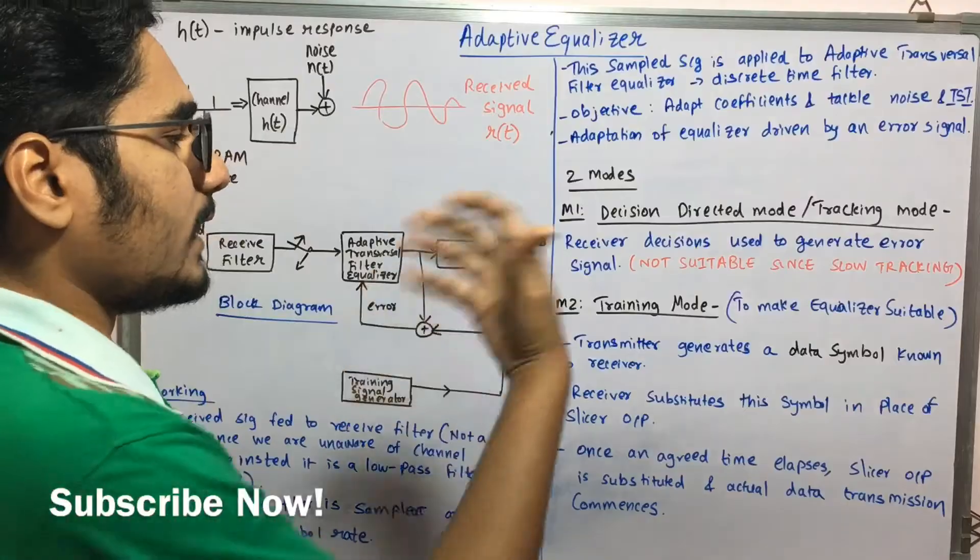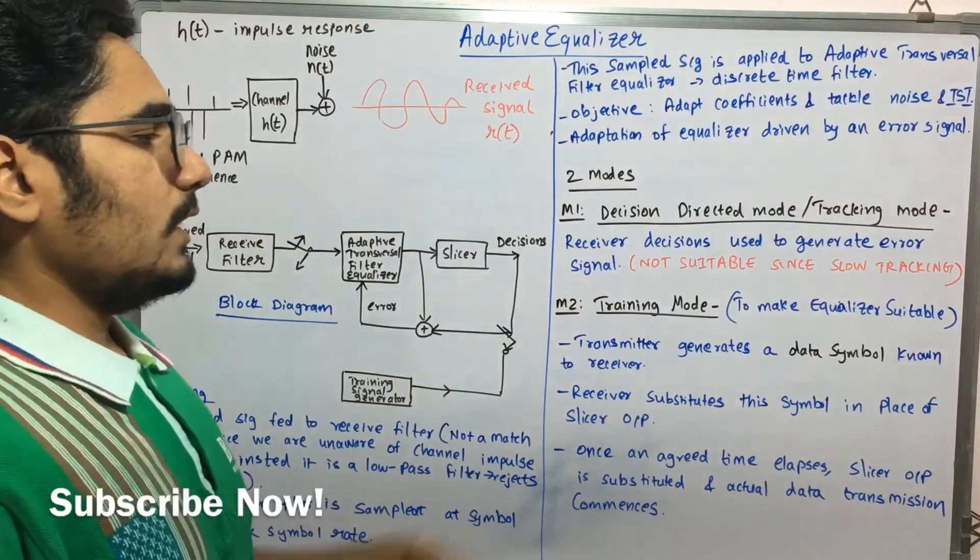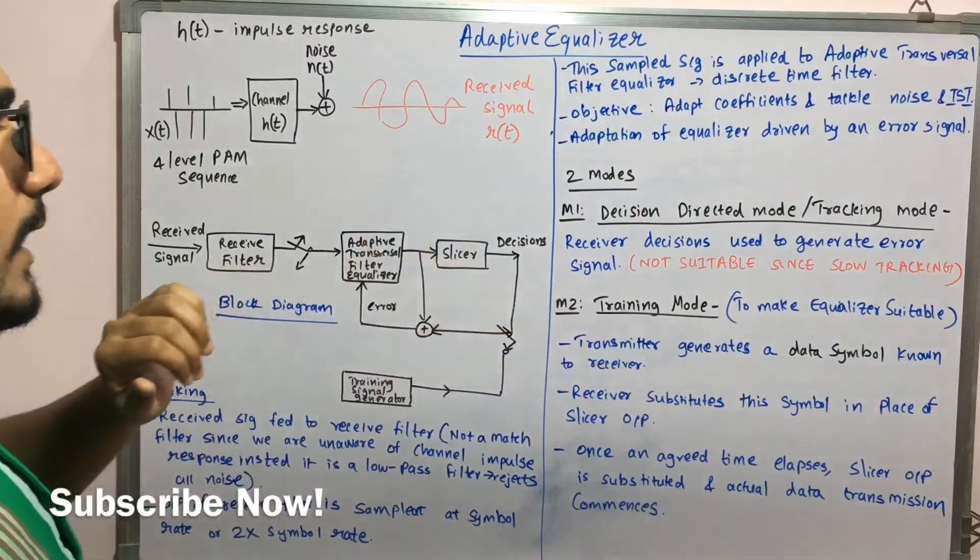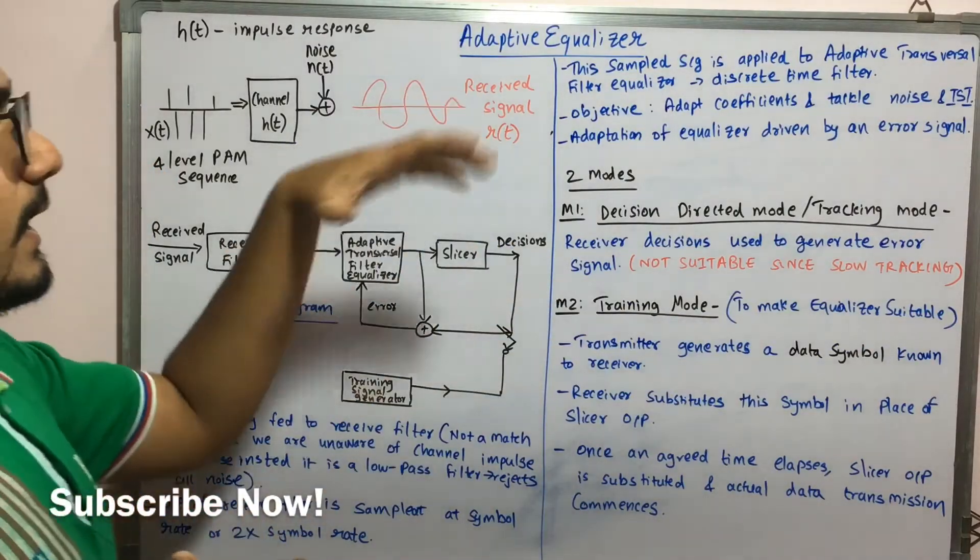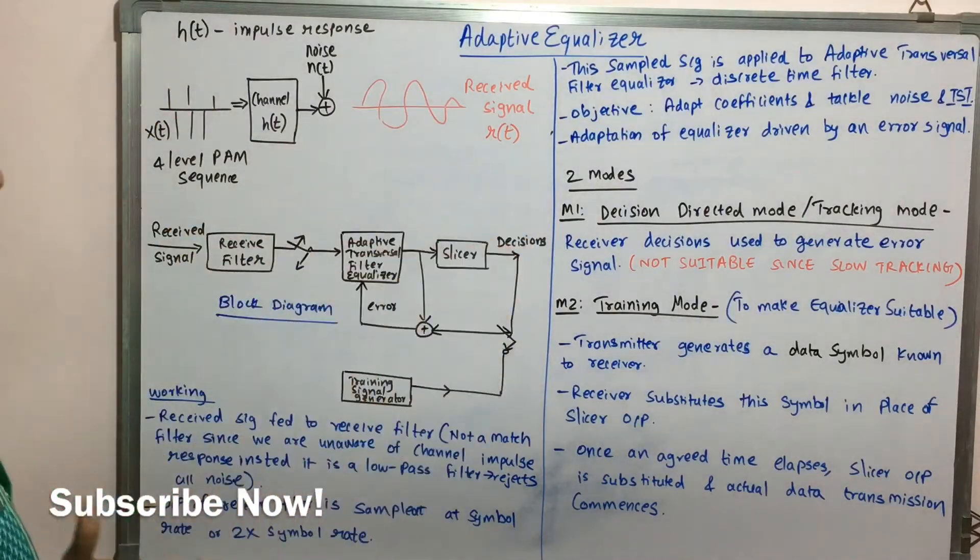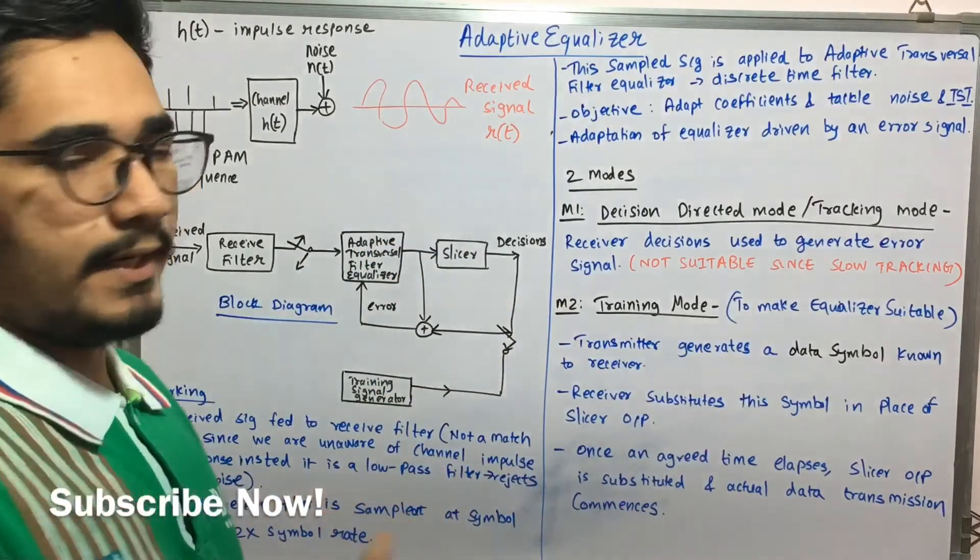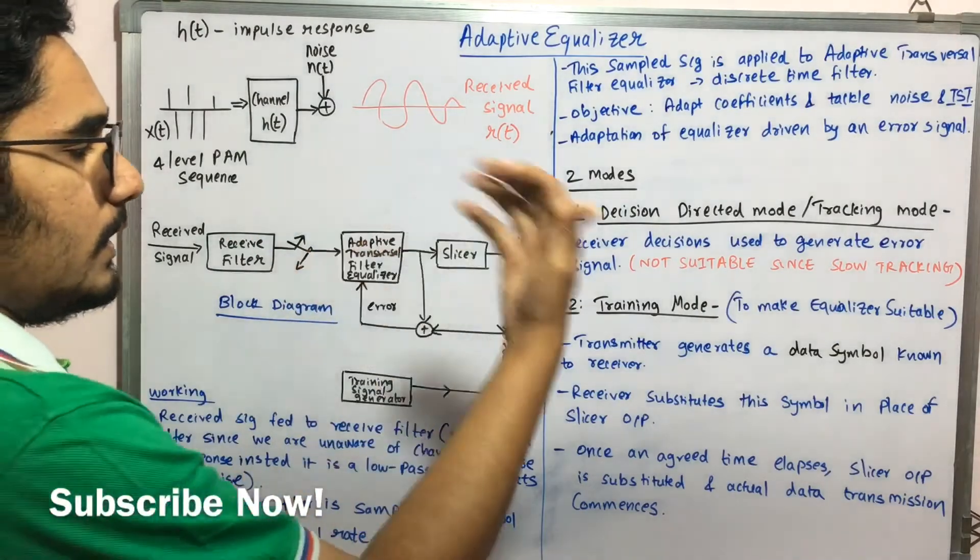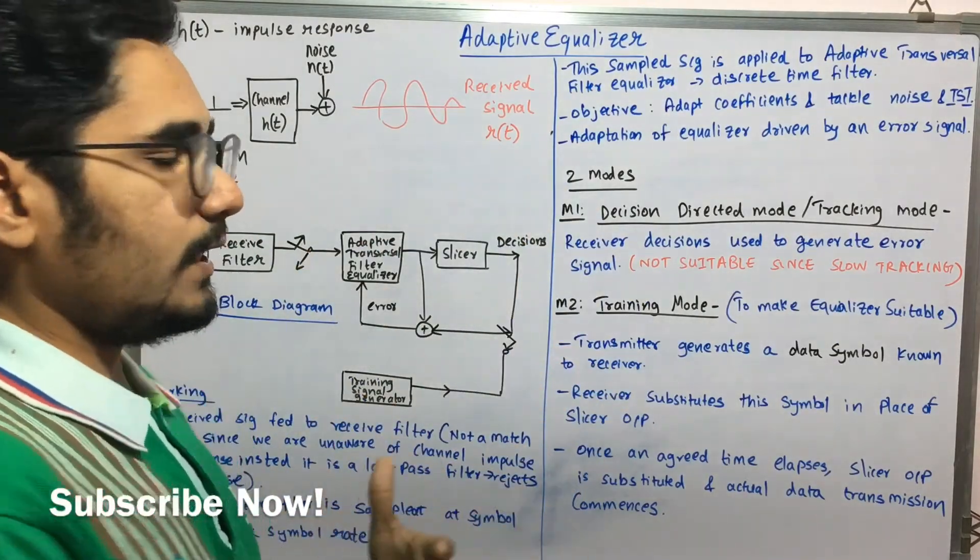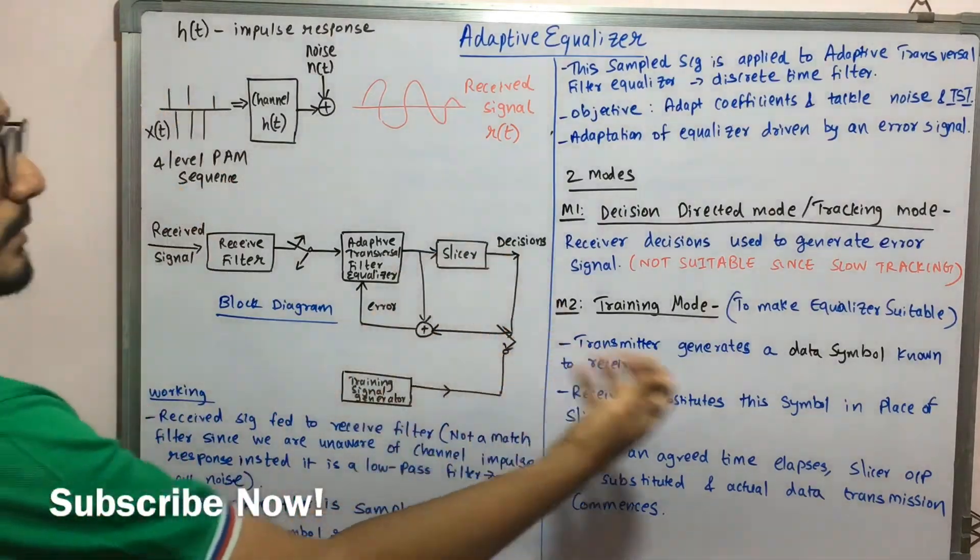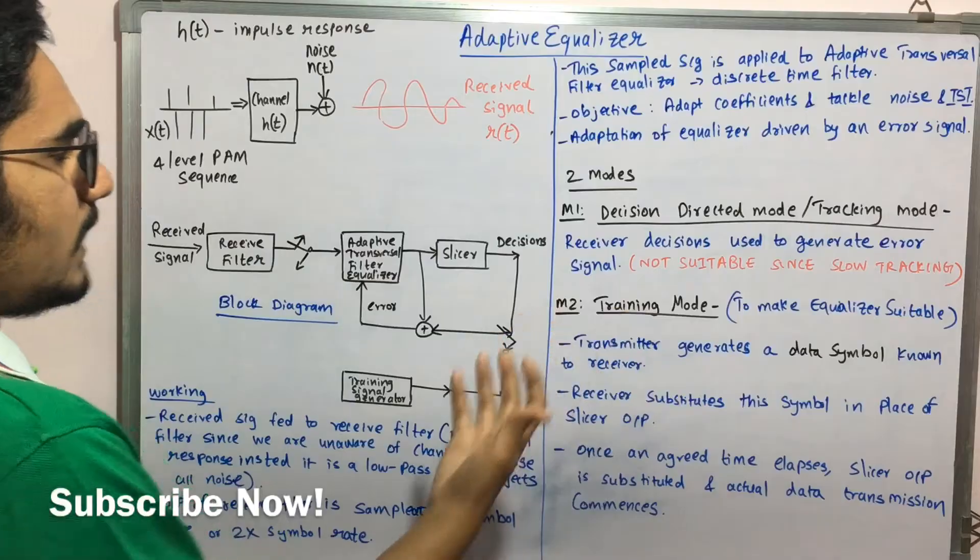And so we employ the second type of mode that is the training mode, which is used to make the equalizer suitable according to the environment. That's the name. It's called as the adaptive equalizer, adaptive to the situations. So in this, whatever decisions or signals you get, the transmitter generates a data symbol, which is known to the receiver. So it's already agreed between the transmitter and the receiver what data symbol they are going to encounter.